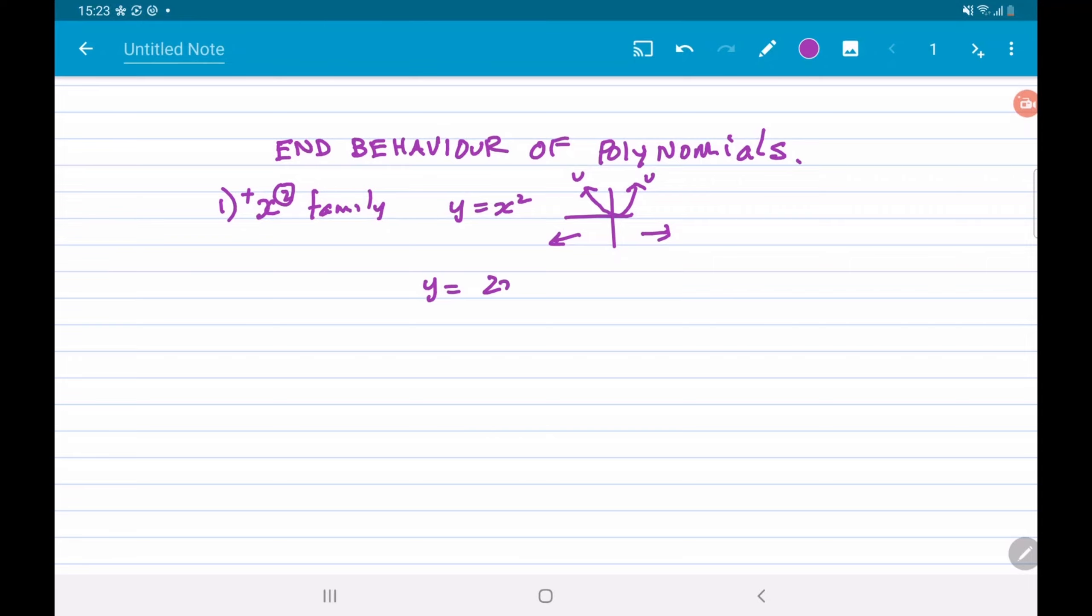For example, 2x squared plus 3x will be up-up on the ends of the graph. We could also have 4x to the fourth plus 3x squared minus 9, because we have an even power here, 4, and a positive coefficient here, 4.